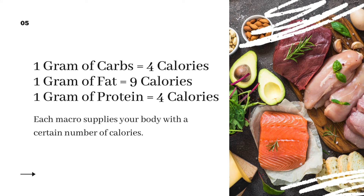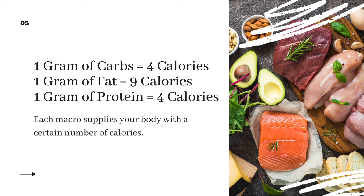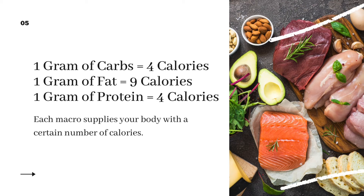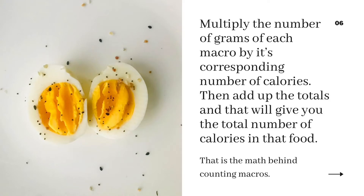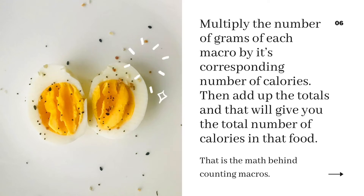This is how macronutrients equate to calories: 1 gram of carbs equals 4 calories, 1 gram of fat equals 9 calories, and 1 gram of protein equals 4 calories. To get the total number of calories in a food item, you multiply the number of grams of each macro by the corresponding number of calories, then add all of those up — that should equal the total calories in the food.